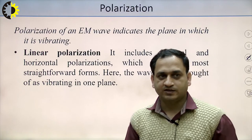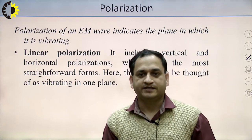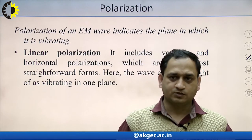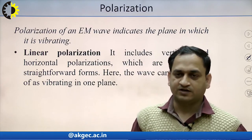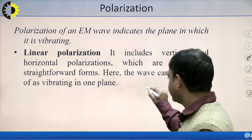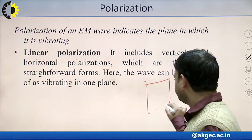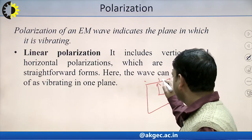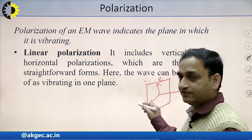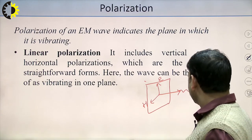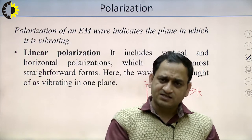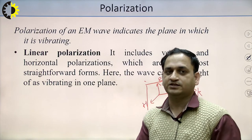In linear polarization, the polarization of the EM wave indicates the plane in which it is working. Linear polarization includes vertical and horizontal polarization, which are straightforward forms where the wave can be thought of as vibrating in a single plane. If both the E component and H component are in the same plane, we call it a uniform plane wave, and the simplest form of polarization is linear polarization.